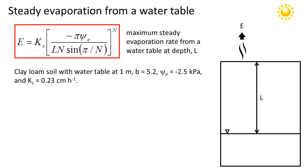So imagine we have now clay loam soil. Here on the right, this is now representing a uniform clay loam soil with a water table at one meter depth. From the prior table, we have b is equal to 5.2. The air entry potential is minus 2.5 kilopascals. And the saturated hydraulic conductivity is 0.23 centimeters per hour.